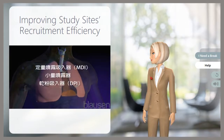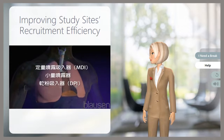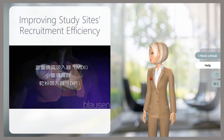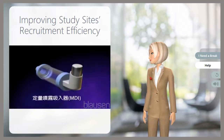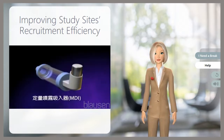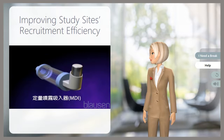有些人因为生病使呼吸道受限造成呼吸困难,可以使用吸入剂型的药物治疗这些呼吸症状。常见的吸入器类型包括定量喷雾吸入器,简称MDI,小量喷雾气和干粉吸入器,简称DPI。